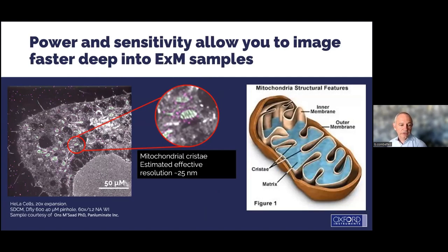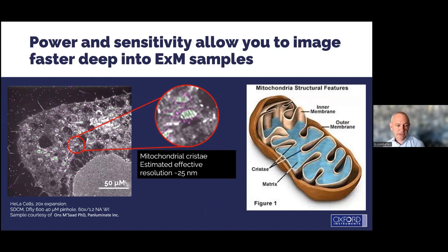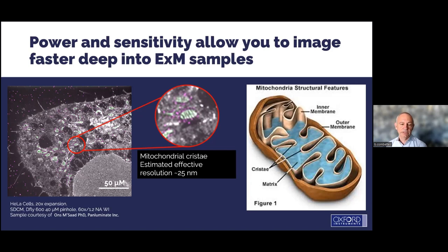High power is also needed for expansion microscopy — people are now expanding samples up to 20 times, which means 20 times fewer photons per camera pixel. Therefore, high power is needed to get a decent signal-to-noise ratio and make a nice image, as shown here for mitochondria where the resolution is around 25 nanometers.